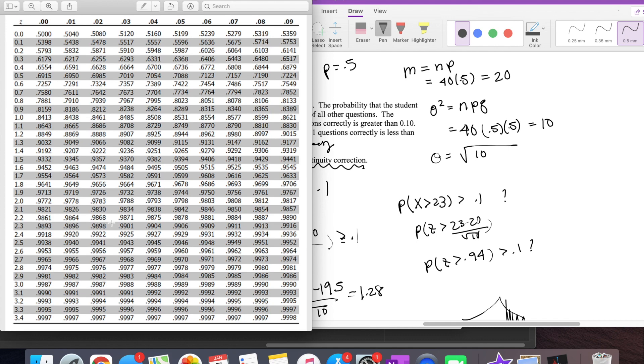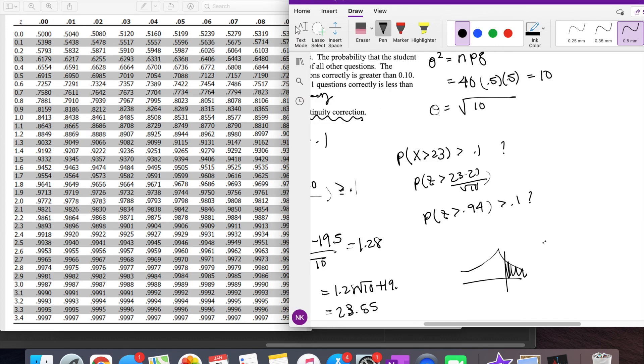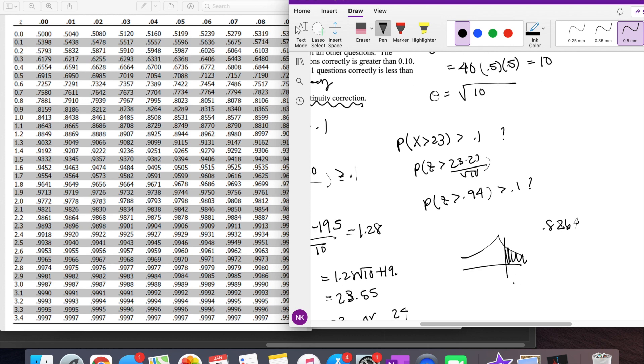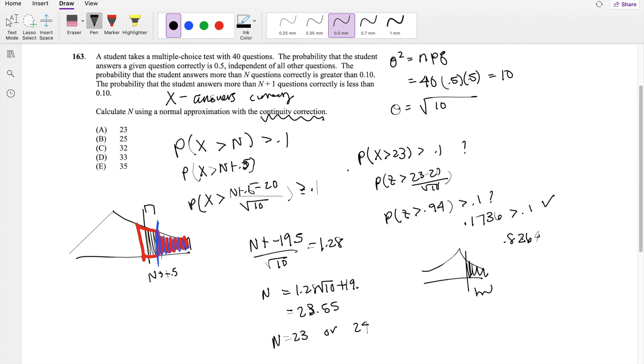So at 0.94, the value is 0.8264. So that means this part right here is 1 minus 0.8264, which is 0.1736, which is indeed greater than 0.1. Check. So our answer will be 23, answer A.